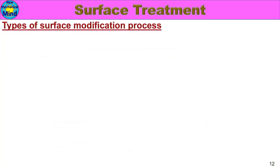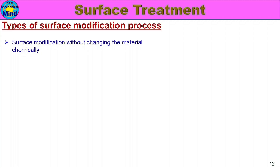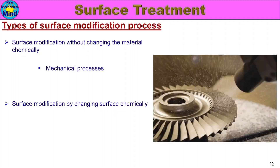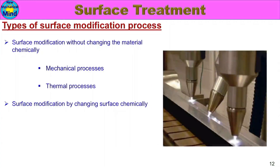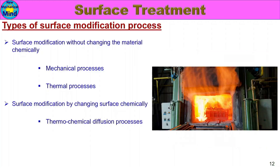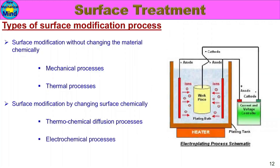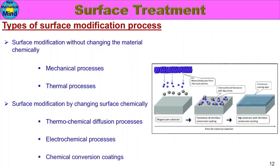Next, we will talk about the types of surface modification process. Surface modification has two major types. The first type is surface modification without changing the material chemically, which includes two processes: mechanical processes and thermal processes. The second type is surface modification by changing the surface chemically, which includes three processes: thermochemical diffusion processes, electrochemical processes, and chemical conversion coatings. So surface modification has five major processes in total.